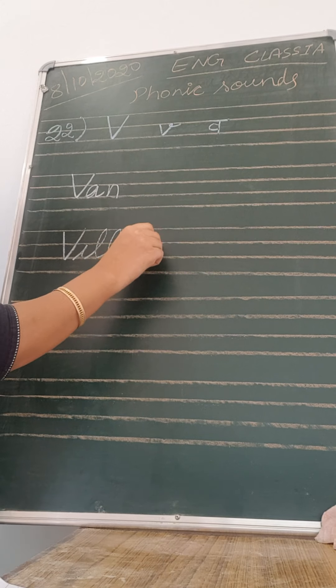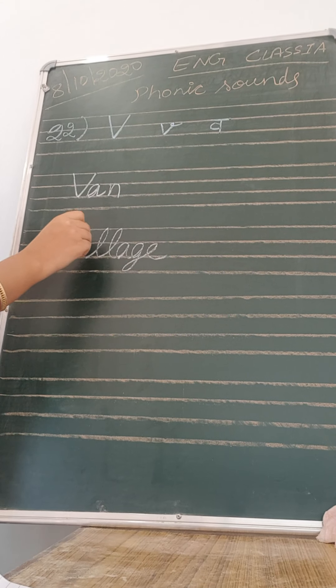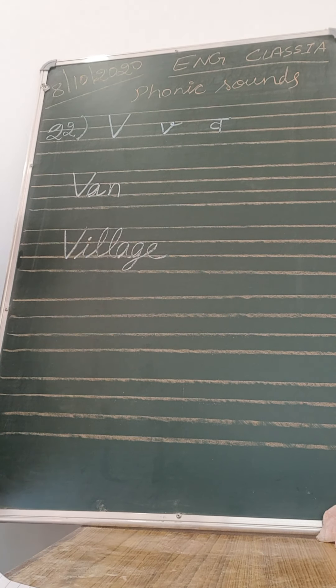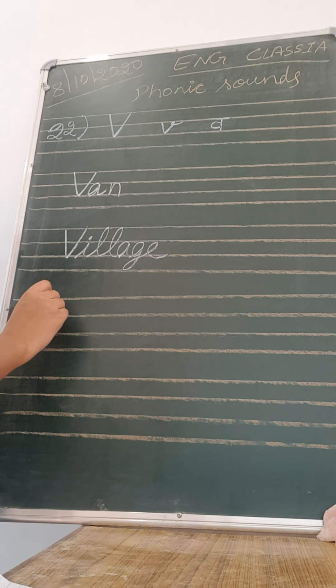Village means 'gao.' V-I-L-L-A-G-E. Village means gao. V is for vegetable.